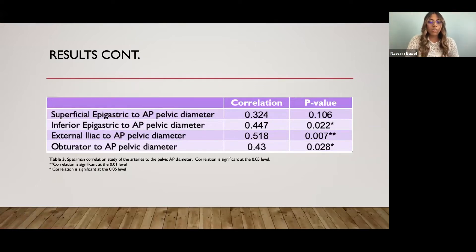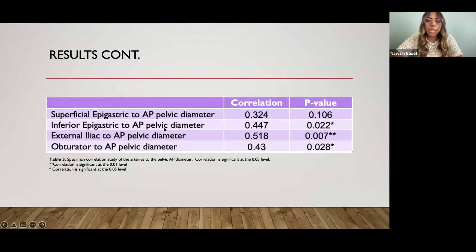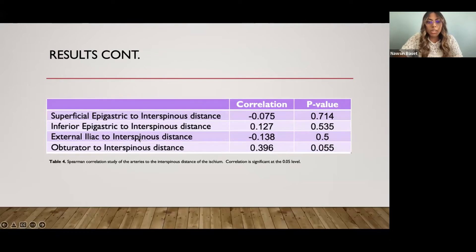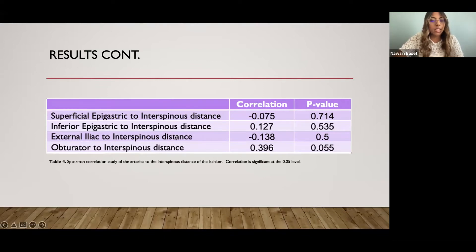The Spearman correlation of arteries to pelvic AP diameter: the mean pelvic AP diameter measured was 113.99 ± 7.99 mm. Three of the four arteries were correlated with the trocar distance—the inferior epigastric, external iliac, and obturator artery—all statistically significant; the external iliac was significant at less than the 0.01 level. The superficial epigastric was the one not correlated. For the interspinous distance, the mean was 111.1 ± 7.14 mm, and this was not statistically significant or correlated with any of the artery measurements. Interestingly, we did find some inverse correlations as well.